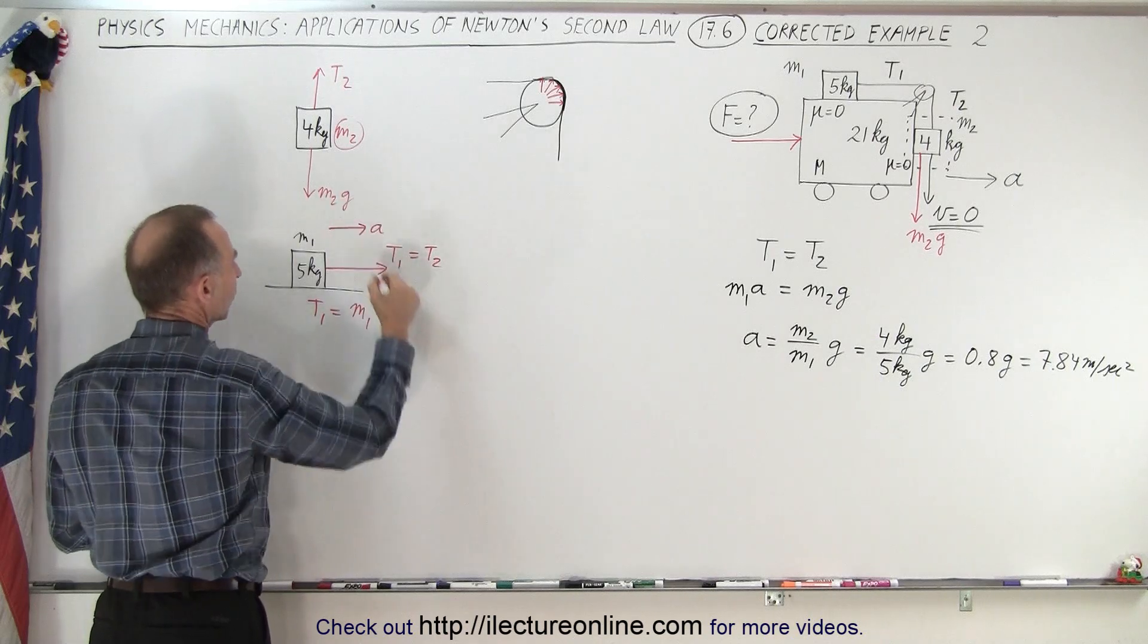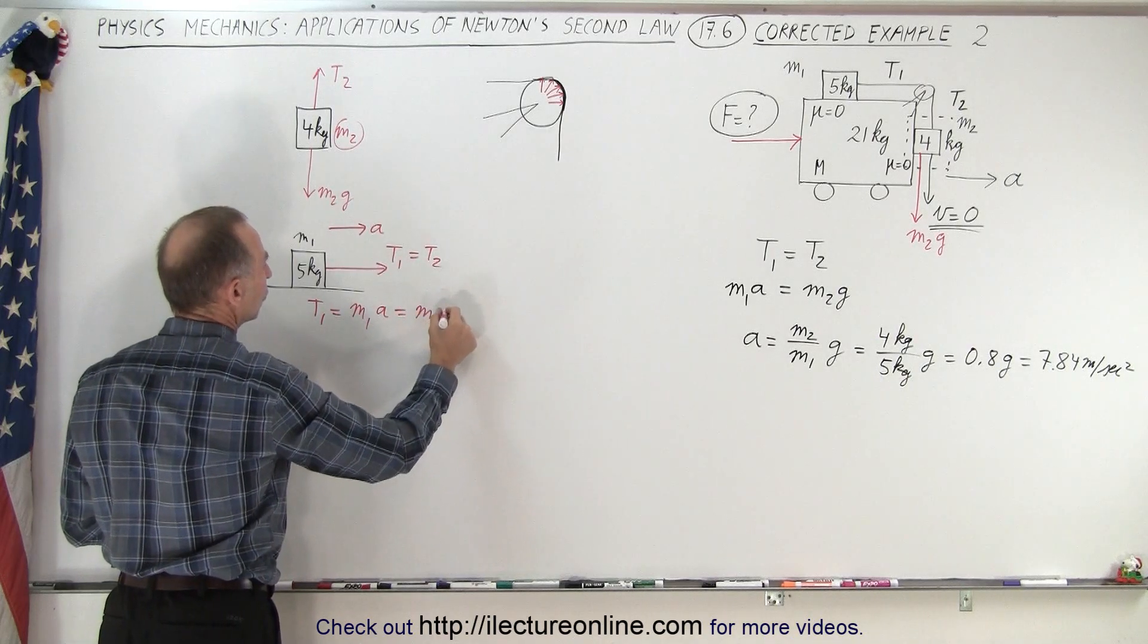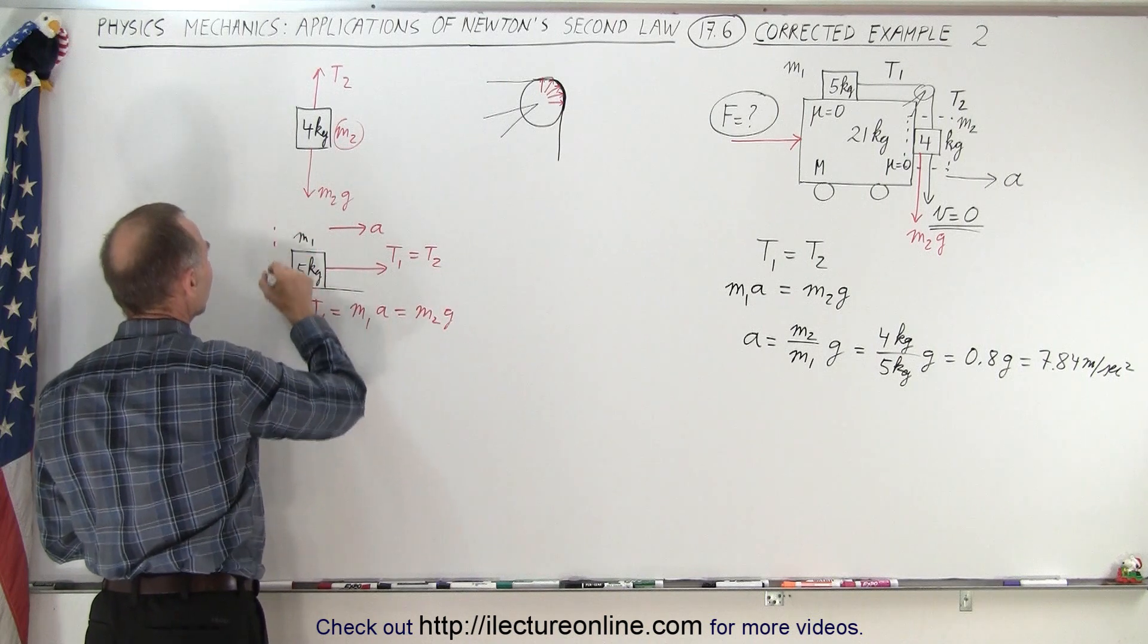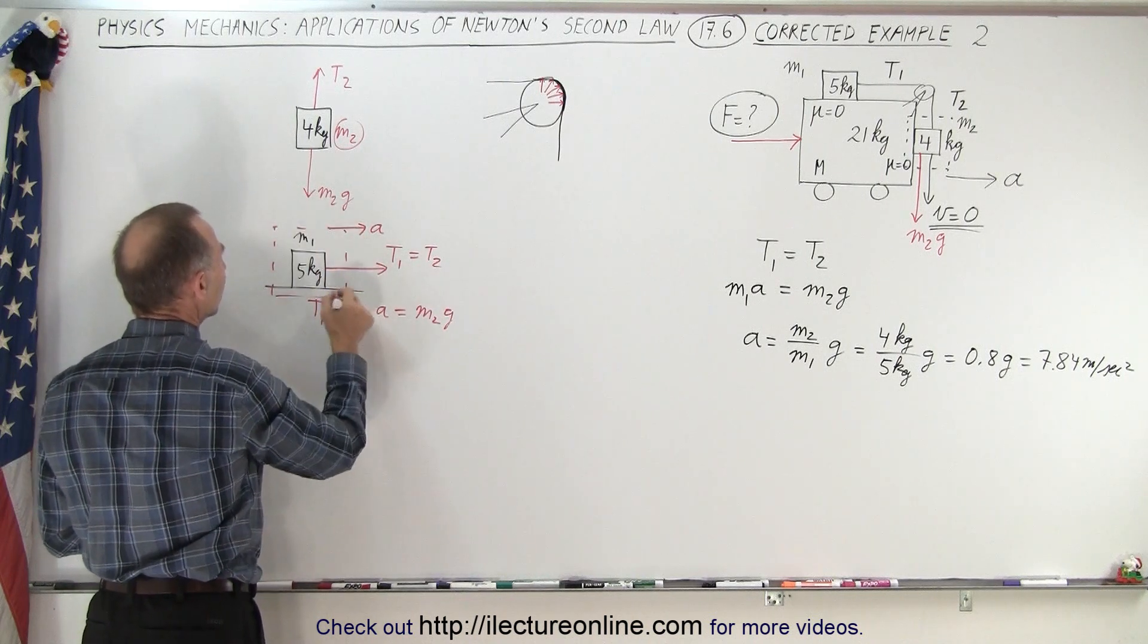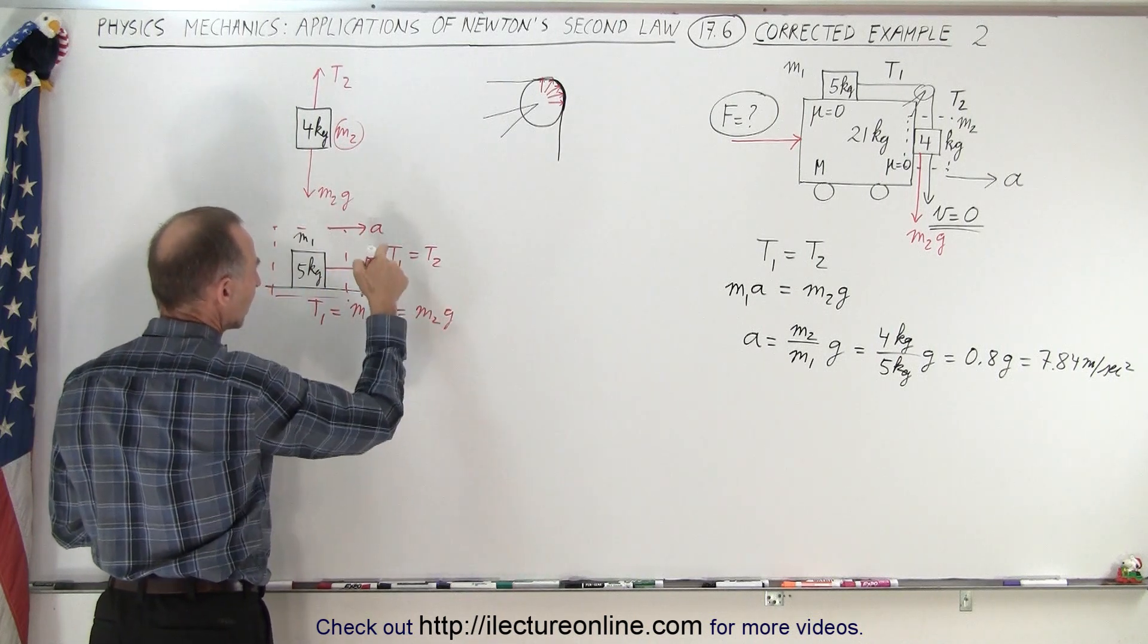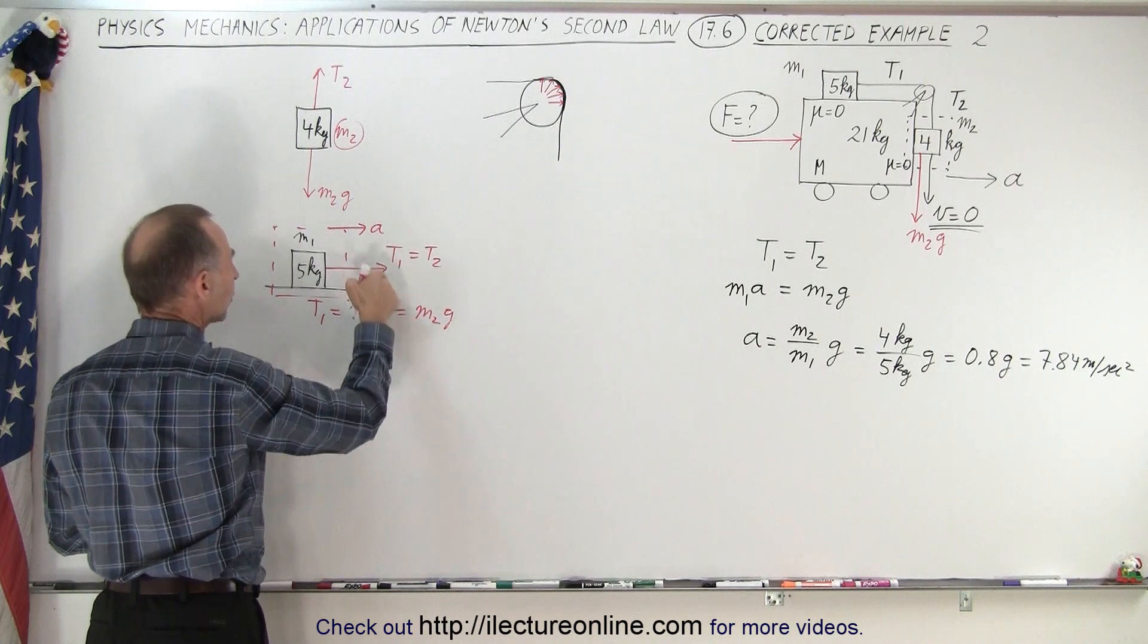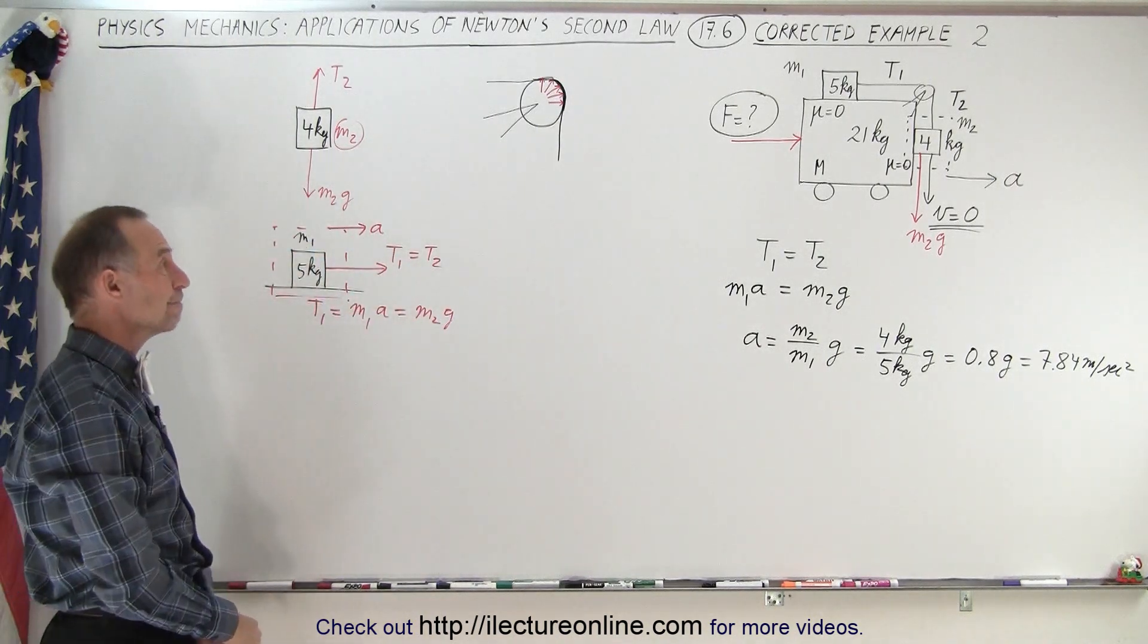Of course we know that those two must be equal to each other, so therefore this is equal to m2g. We can simply look at that with a free body diagram. We can see that there's a force pulling it to the right equal to T1, and that must be equal to the force required to accelerate it at acceleration a.